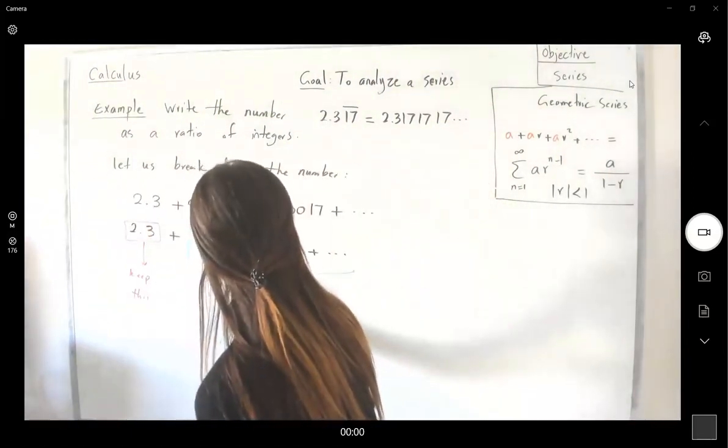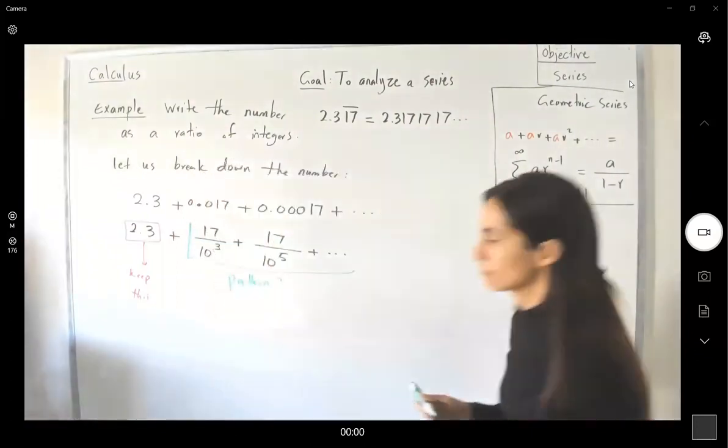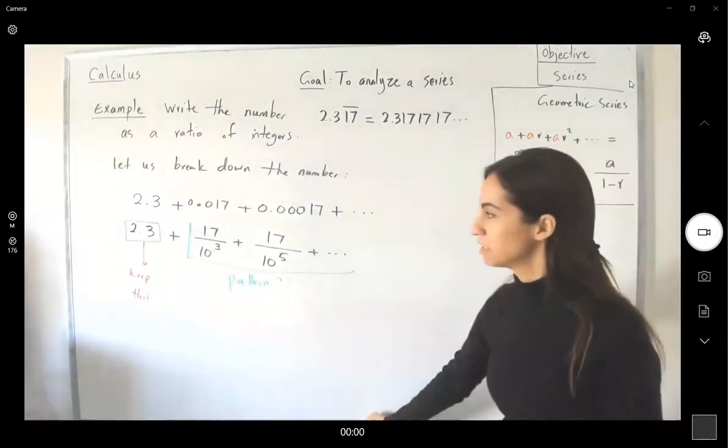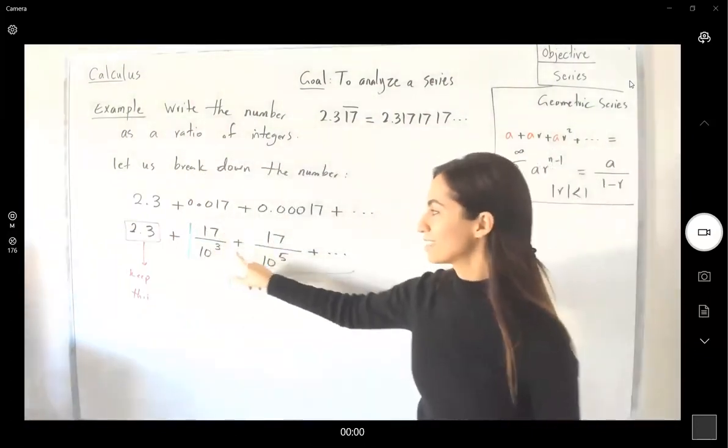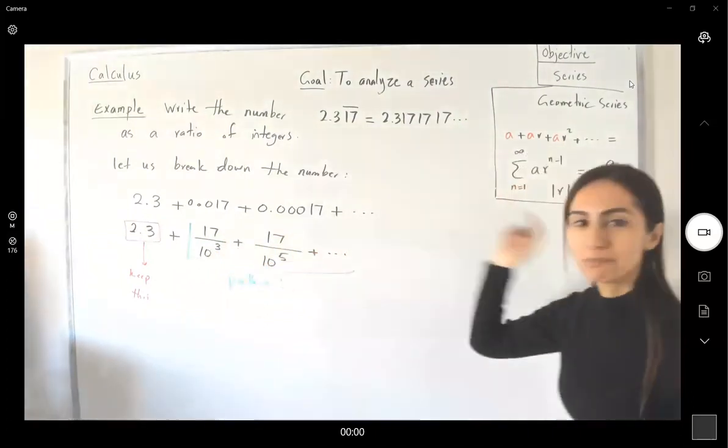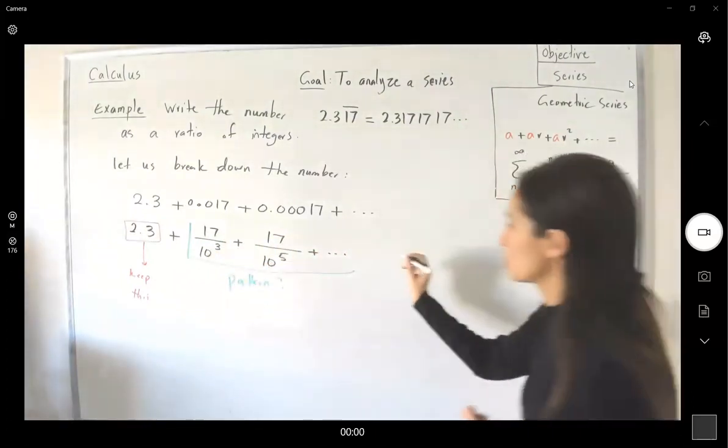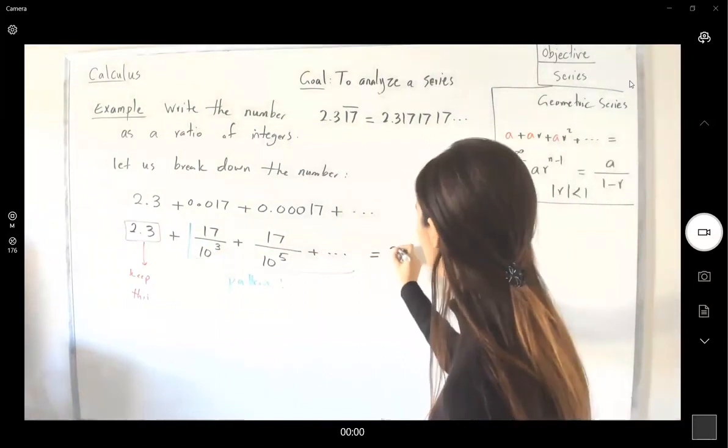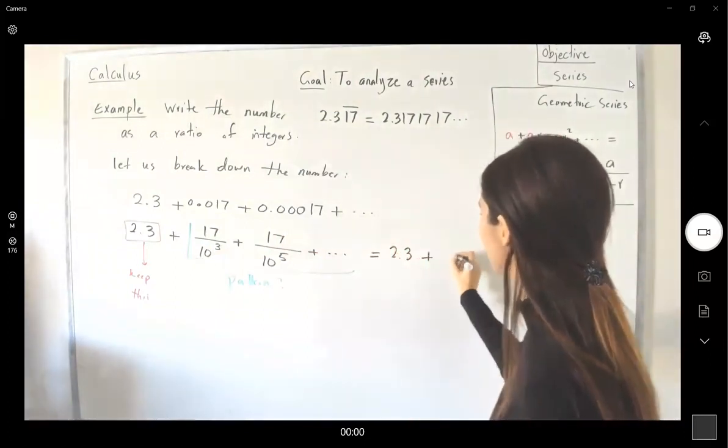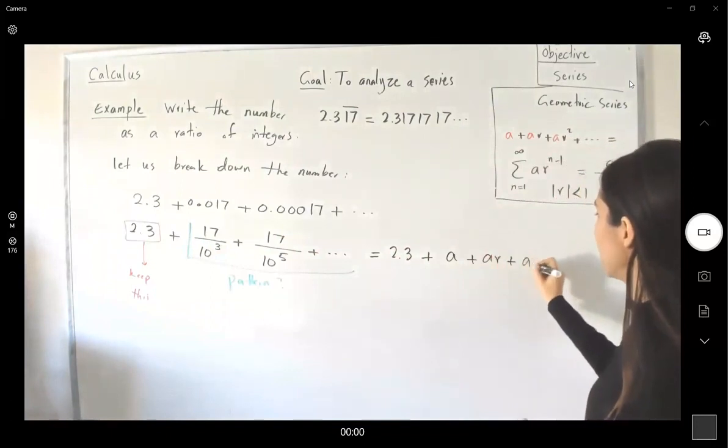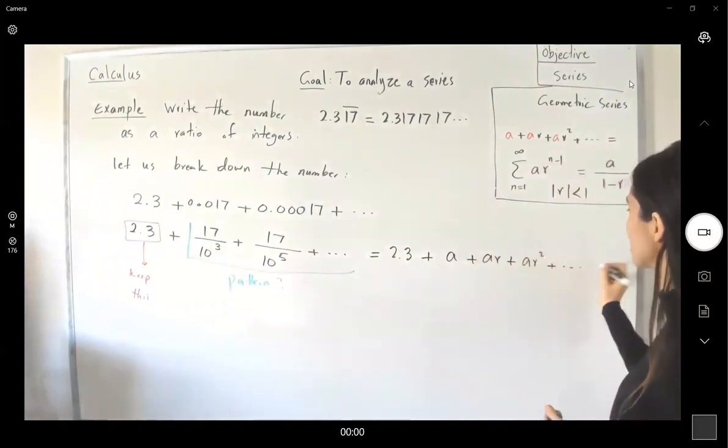What's the pattern? This is your a. This is a times r plus the rest of them. So this can be written as 2.3 plus a plus ar plus ar squared plus the rest of the terms.